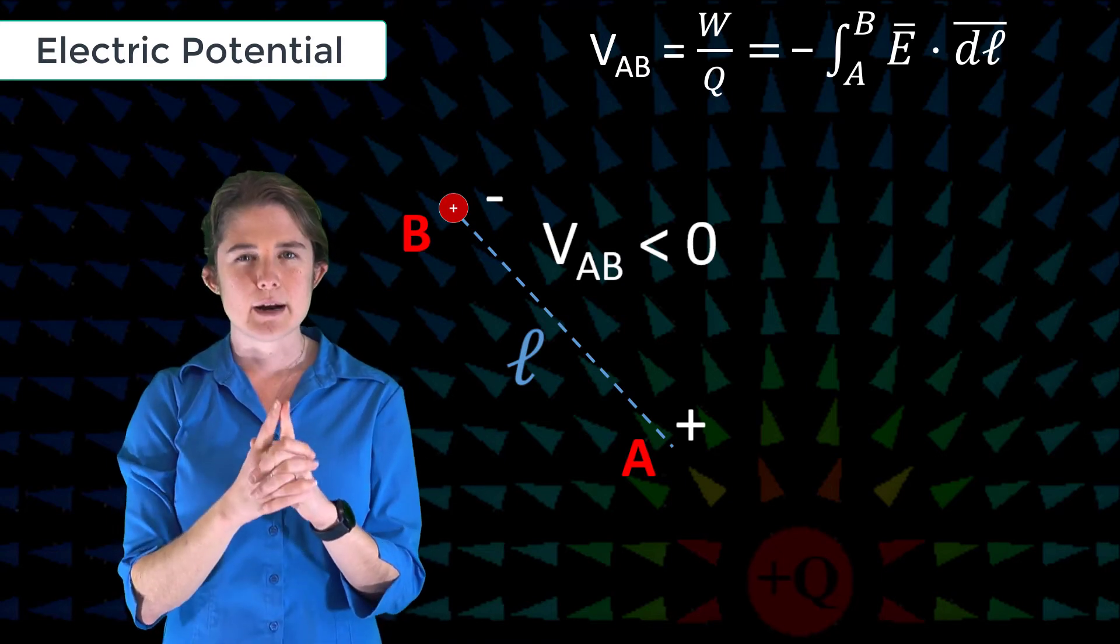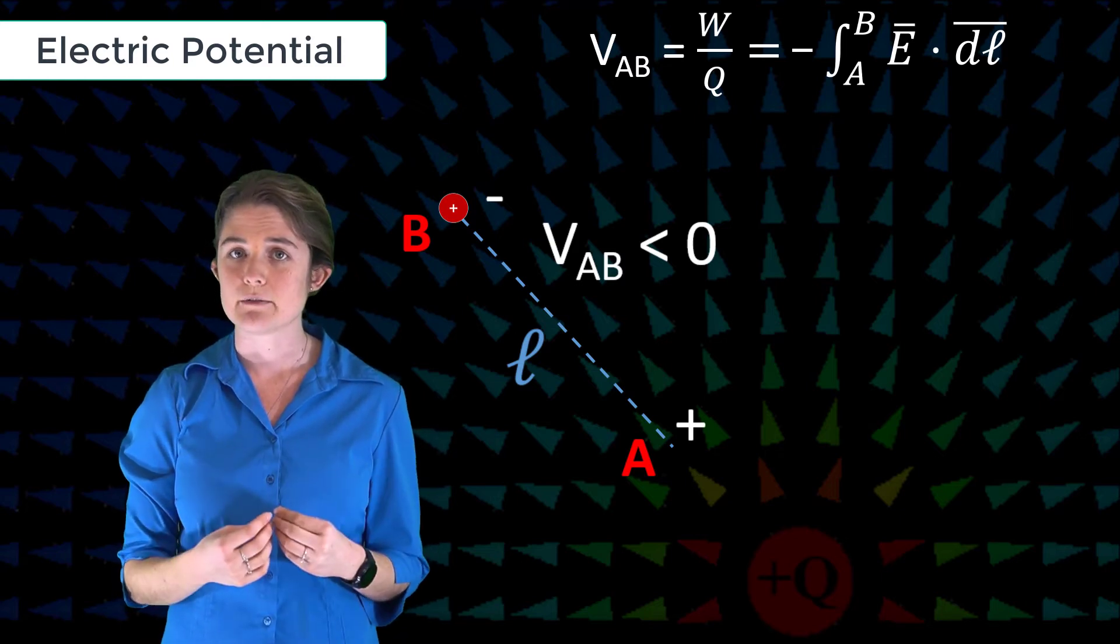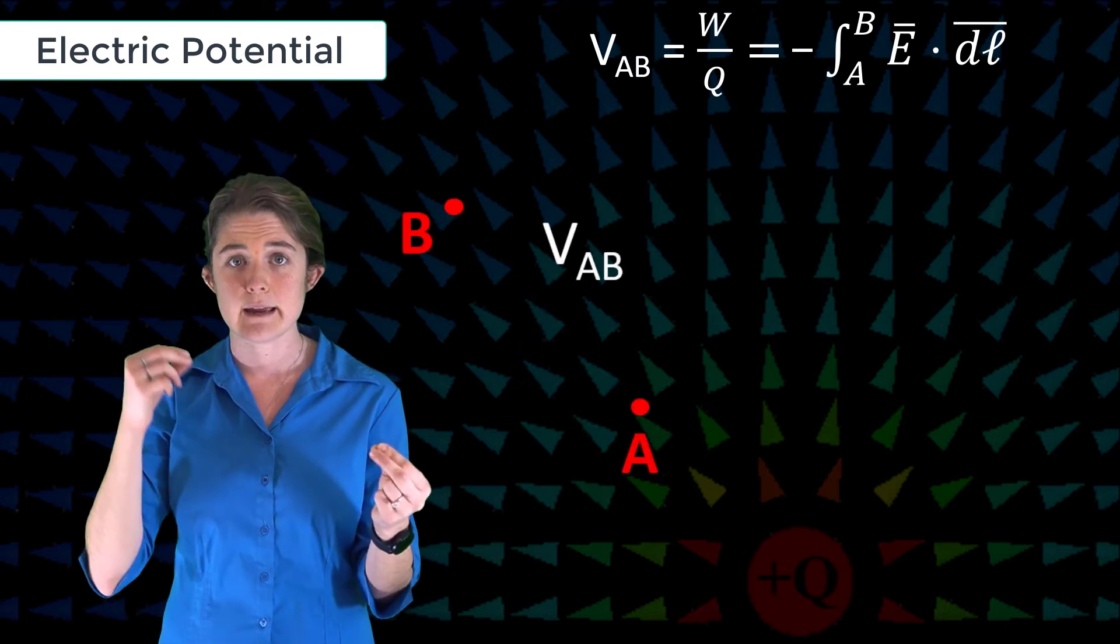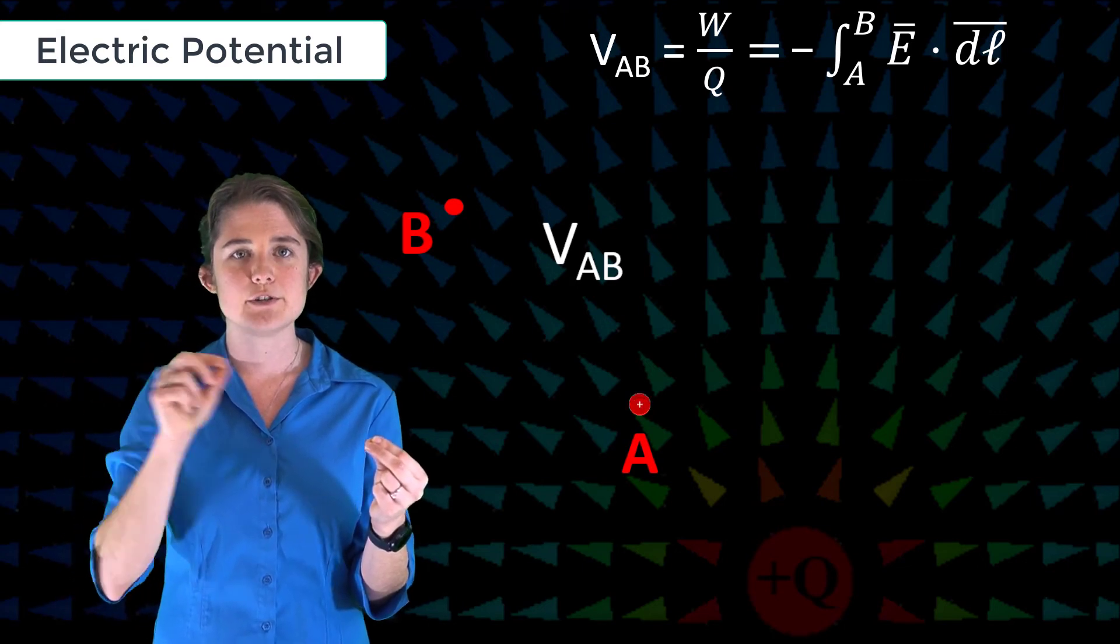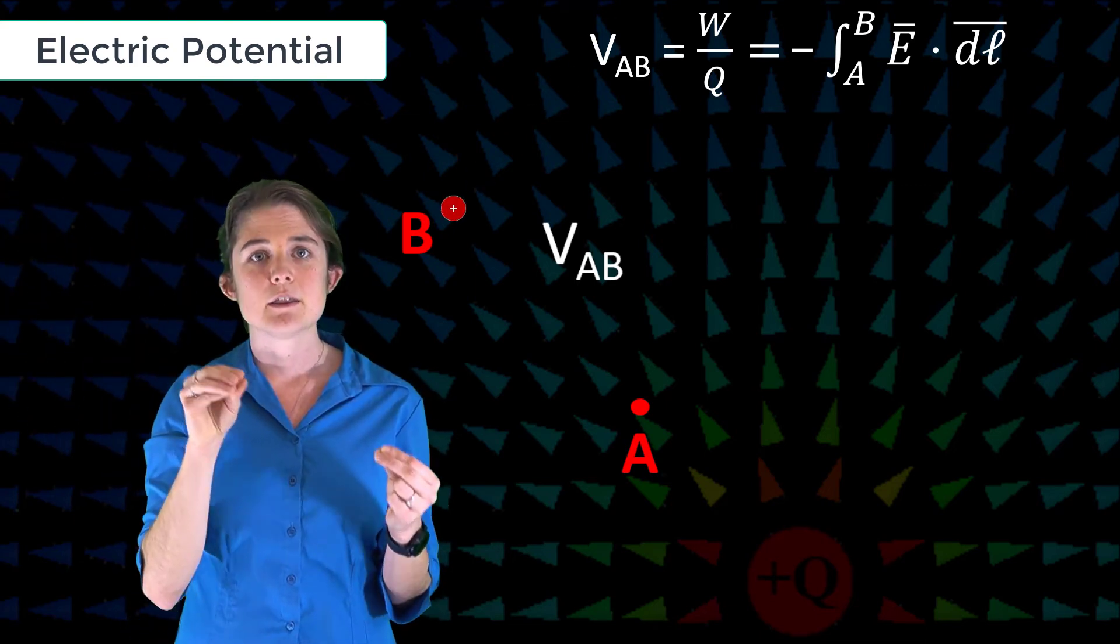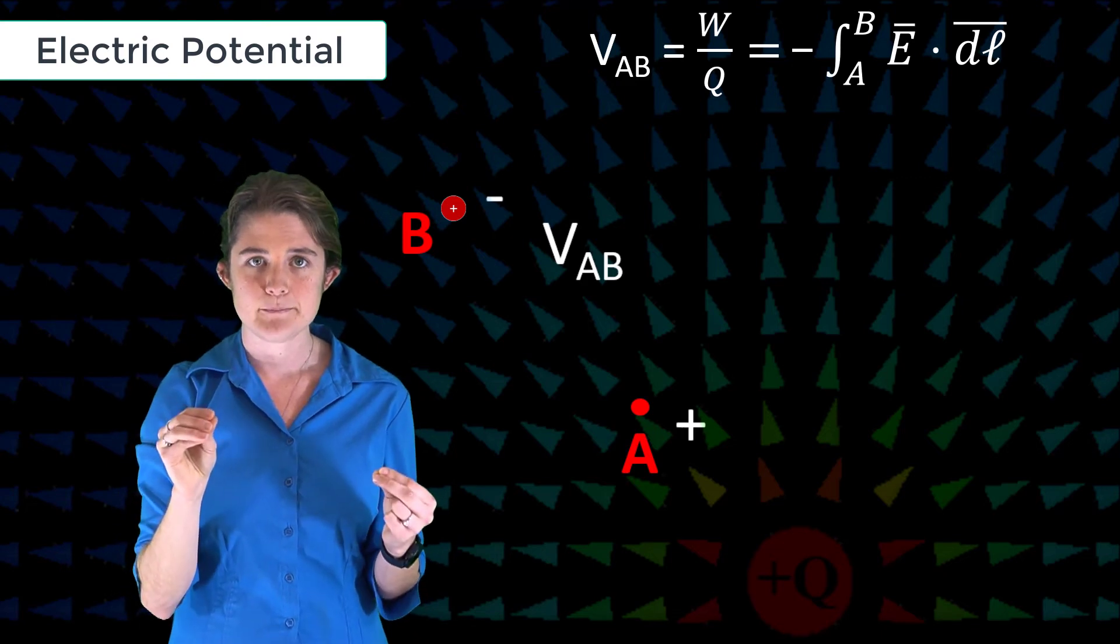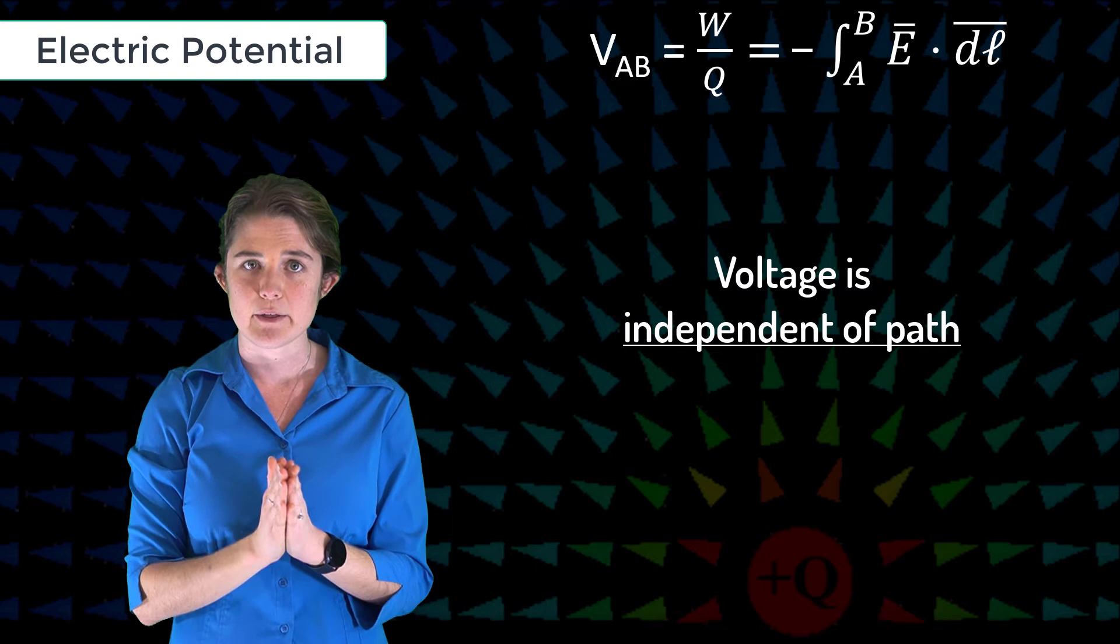Right now I want to pause to note that because electric fields are conservative, the measured voltage only depends on the endpoints A and B, not the path you took to get from one to the other. In other words, you can go straight from A to B, or you can go from A to the far end of creation and back to B—the final voltage measurement between the two endpoints will be the same. Another way of saying this is that voltage is independent of path.